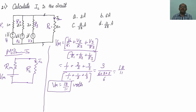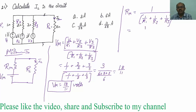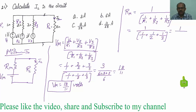Next, I have to find Millman's resistance. Rm = 1 / (1/R1 + 1/R2 + 1/R3) = 1 / (1/1 + 1/2 + 1/3) = 1 / (11/6) = 6/11 ohms. So Millman's resistance Rm = 6/11 ohms.